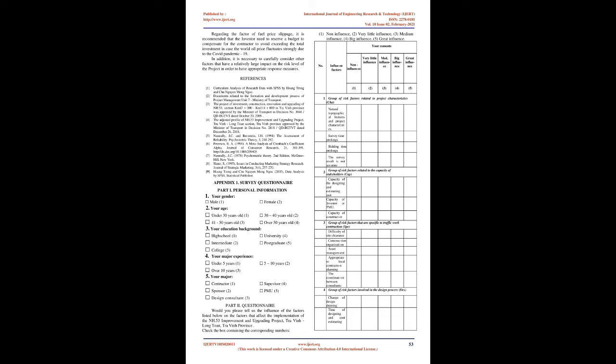The average values of observed variables from DES1 to DES3 in the group of risk factors related to the design process range from 2.05 to 2.15 on the 5-point Likert scale. Thus, less than half of the respondents agreed with the criteria in the group of risk factors related to design. The average values of DES1 to DES3 are not much different, in the range from 2.05 to 2.15 on a 5-point scale, showing that these risk factors have impacts on the project implementation, but just below average.